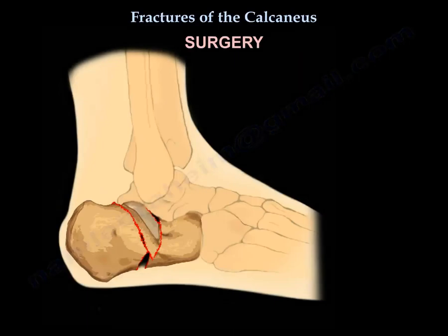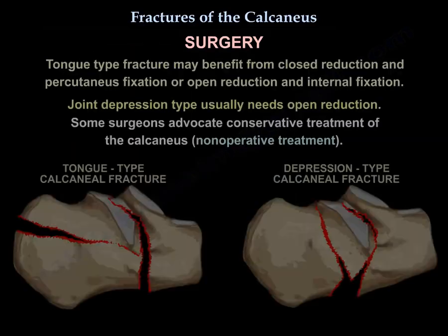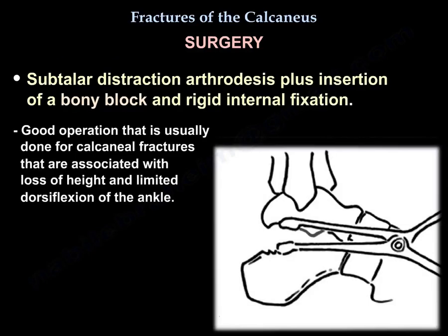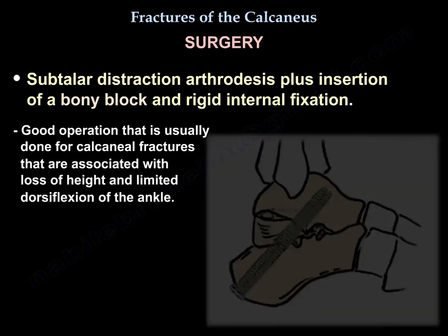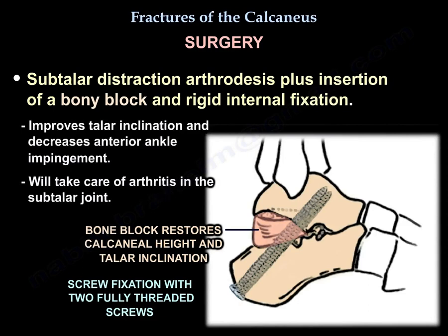Surgery on the calcaneus definitely decreases the risk of post-traumatic arthritis. The tongue-type fracture may benefit from closed reduction and percutaneous fixation or open reduction and internal fixation. The joint depression type usually requires open reduction. Subtalar distraction arthrodesis with insertion of a bone block and rigid internal fixation is a good operation for calcaneal fractures associated with loss of height and limited ankle dorsiflexion — it improves talar inclination, decreases anterior ankle impingement, and addresses arthritis in the subtalar joint.